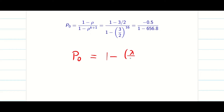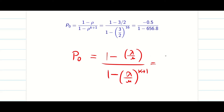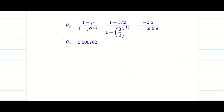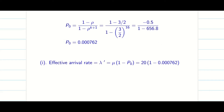Now we need P₀. The formula is: P₀ = (1 − rho) / (1 − rho^(K+1)). Substituting rho = 1.5 and K = 15, we calculate P₀ to four decimal places using a calculator.